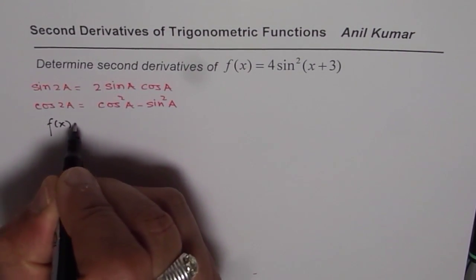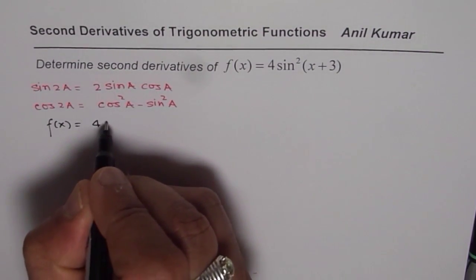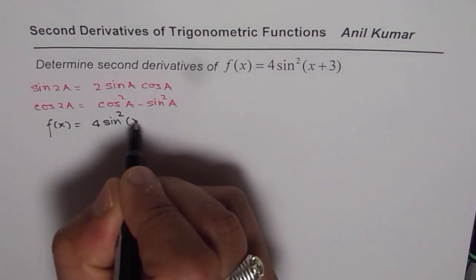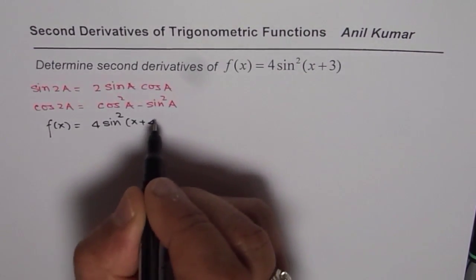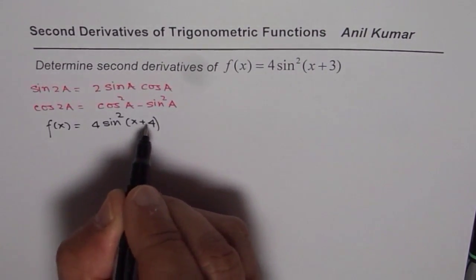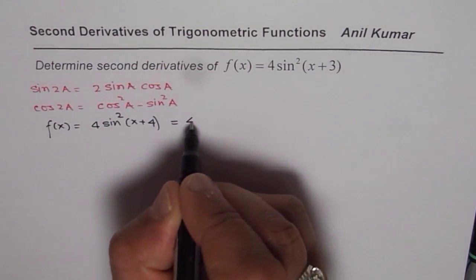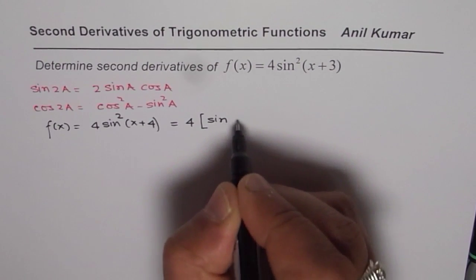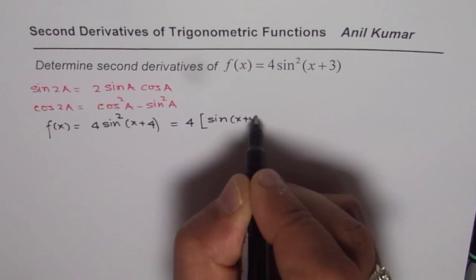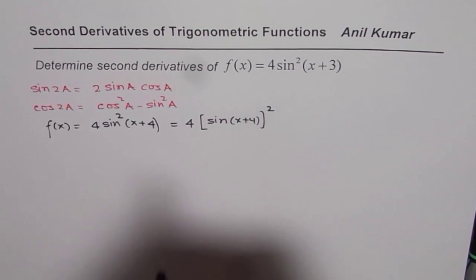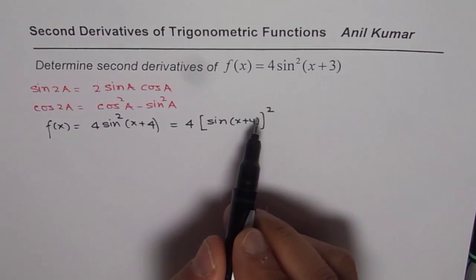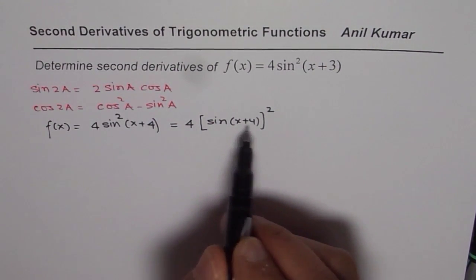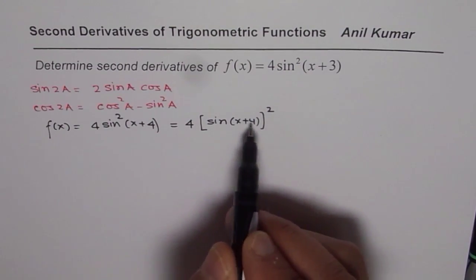We are given f of x equals 4 sine square x plus 4. When we have 4 sine square x plus 4, you could treat this as 4 times sine of x plus 4, whole square. This gives you a hint that you could use the power rule followed by the chain rule to find the derivative.